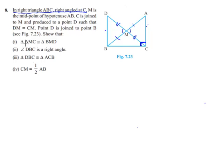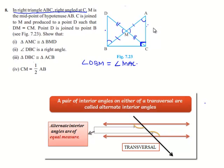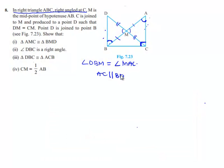From the first proof, triangle AMC is congruent to triangle BMD. When two triangles are congruent, their corresponding sides and angles are equal. So angle DBM and angle MAC are corresponding angles, meaning angle DBM is equal to angle MAC. These two angles are alternate interior angles with lines AC and BD, and AB as transversal. Therefore, line segment AC is parallel to BD.